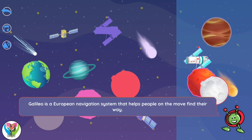Galileo is a European navigation system that helps people on the move find their way.